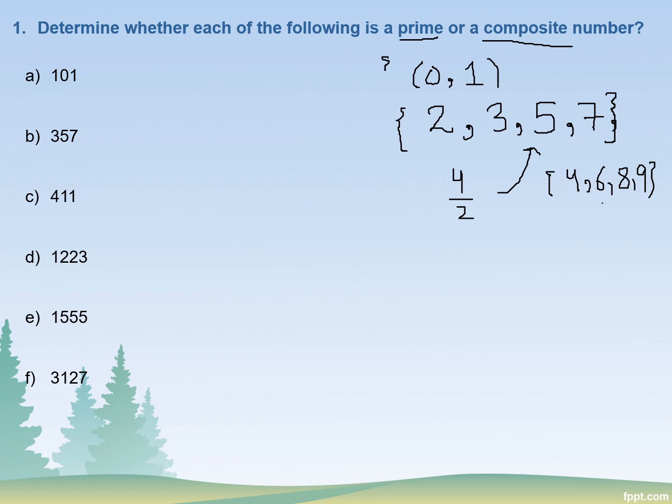I hope you understood the difference between prime and composite numbers. Now we will learn a method to determine whether any number is prime or composite. If a number is only divisible by itself or by one, it is a prime number. If it is divisible by numbers other than one and itself, it is a composite number. There is a useful rule: you look for the nearest perfect square to the number you are testing.